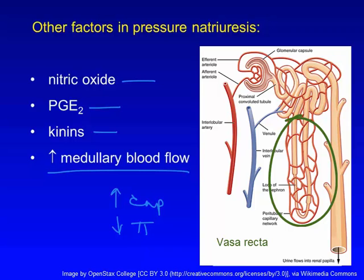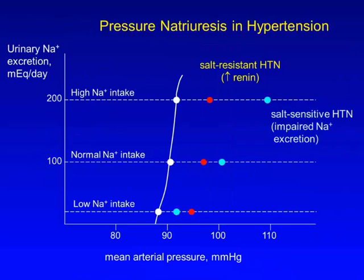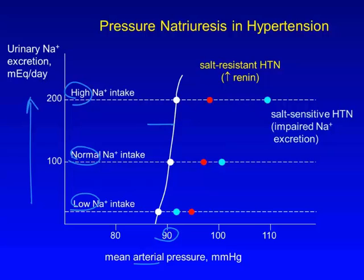So this is how pressure natriuresis works. What good is it, and why do we need it? Pressure natriuresis is the reason that normal people do not become hypertensive when they are salt and water loaded, for instance, with a high-salt diet. In this diagram, you can see that a normal person maintains a pretty constant pressure, shown here by the white curve, as mean arterial pressure. Blood pressure remains normal whether their salt intake is low, medium, or high. This is because pressure natriuresis helps them to increase sodium excretion to match intake and to maintain a normal intravascular volume and blood pressure at any level of sodium intake.